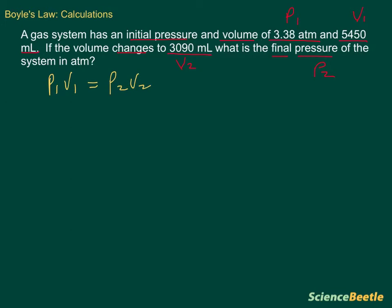And so our P1 was 3.38 atmospheres, and we're going to multiply that by our volume 1, which is 5450 milliliters. This is going to be equal to our pressure 2,